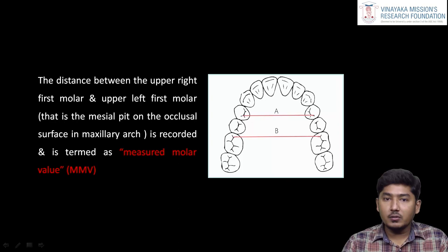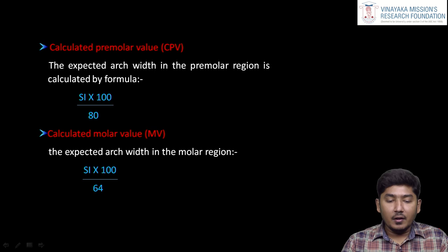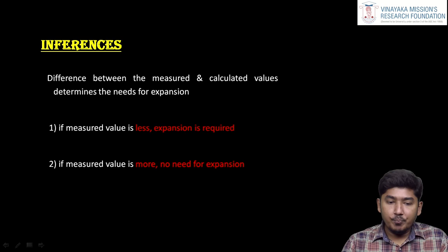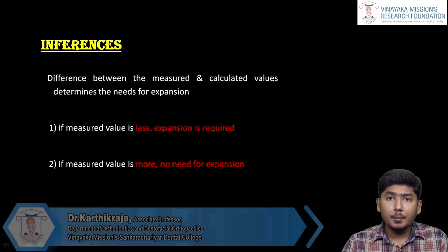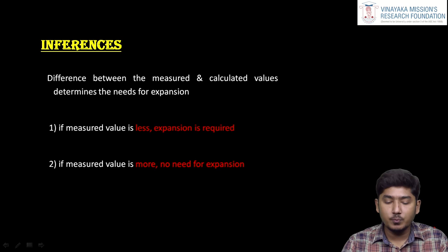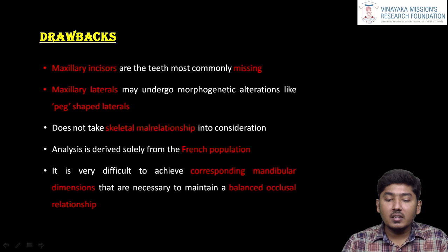The measured molar value is measured from the mesial pit of the first molar from one side to the contralateral side. He came up with a formula: the calculated premolar value is the sum of the incisors × 100 / 80. For the calculated molar value, it is the sum of the incisors × 100 / 64. His inference was: if the measured value is less than the calculated value, the patient is in need of expansion. If the measured value is more, there is no need for expansion.